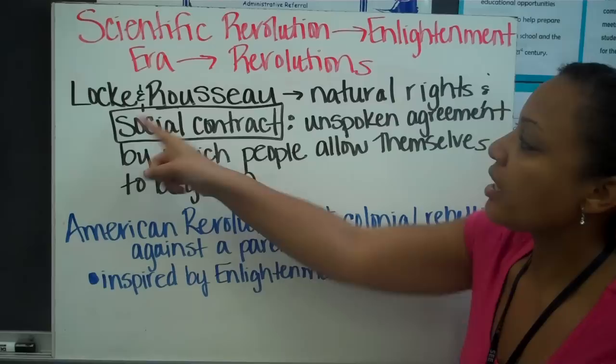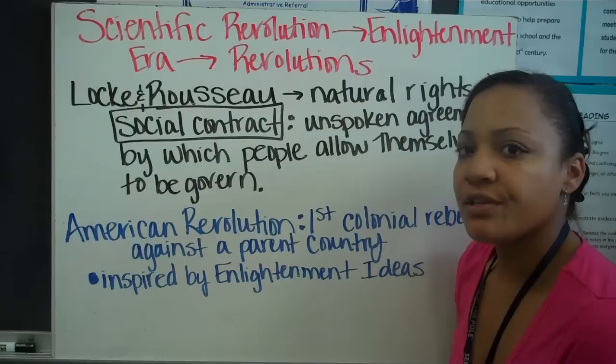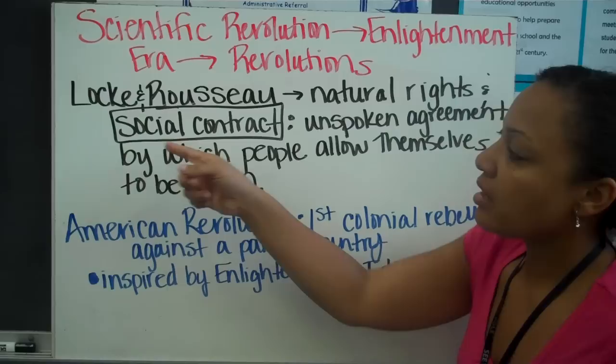Looking at some of the Enlightenment philosophers from last week, we looked at Locke and Rousseau. Locke discussed natural rights, and those natural rights were life, liberty, and property. Jefferson is going to change it into life, liberty, and the pursuit of happiness.